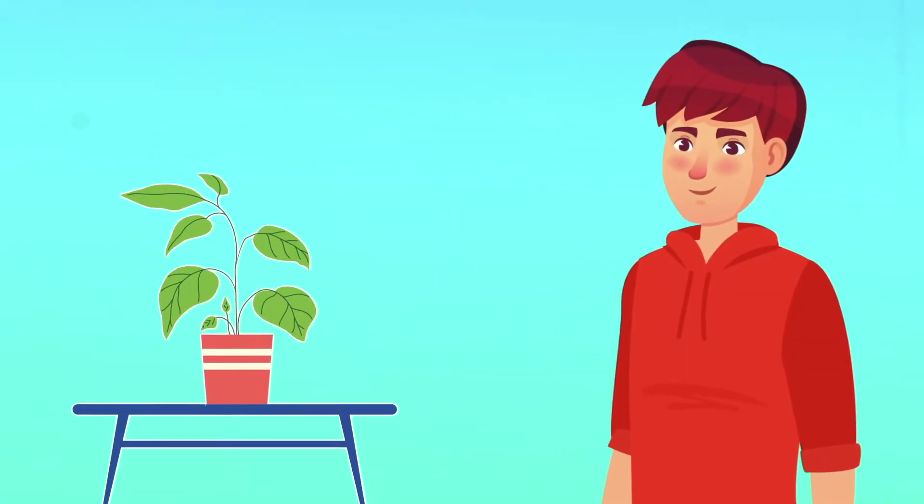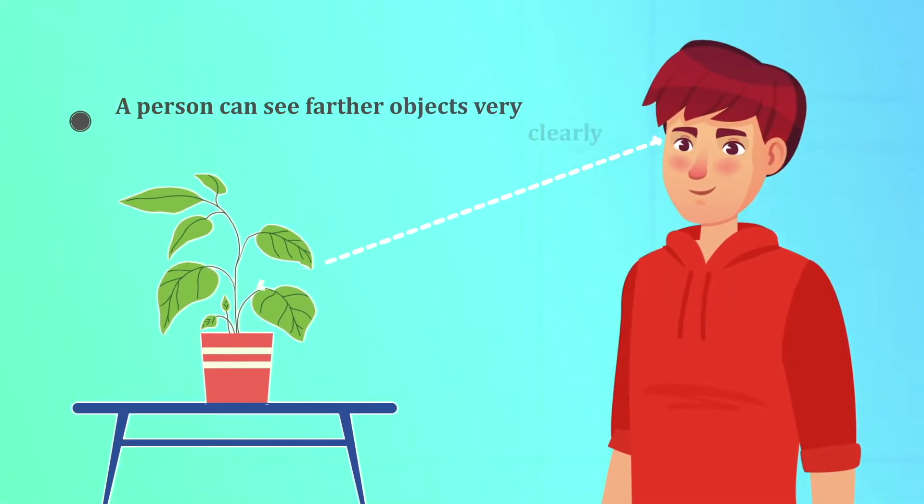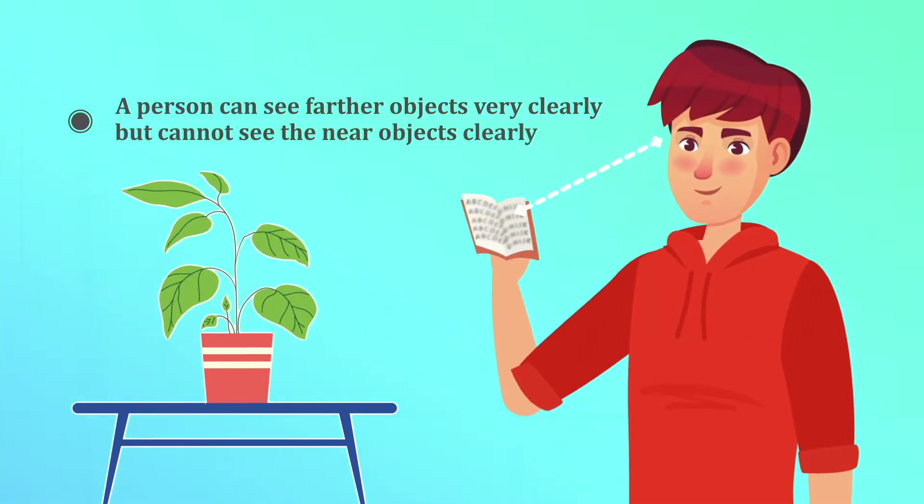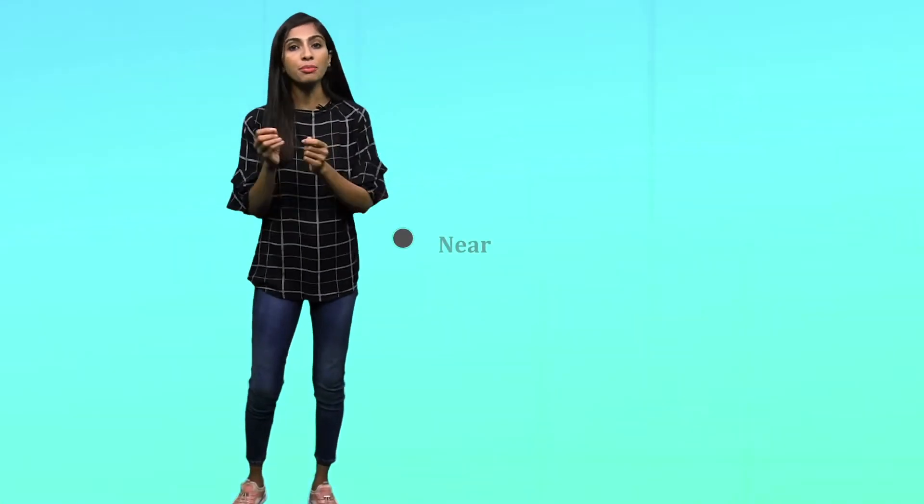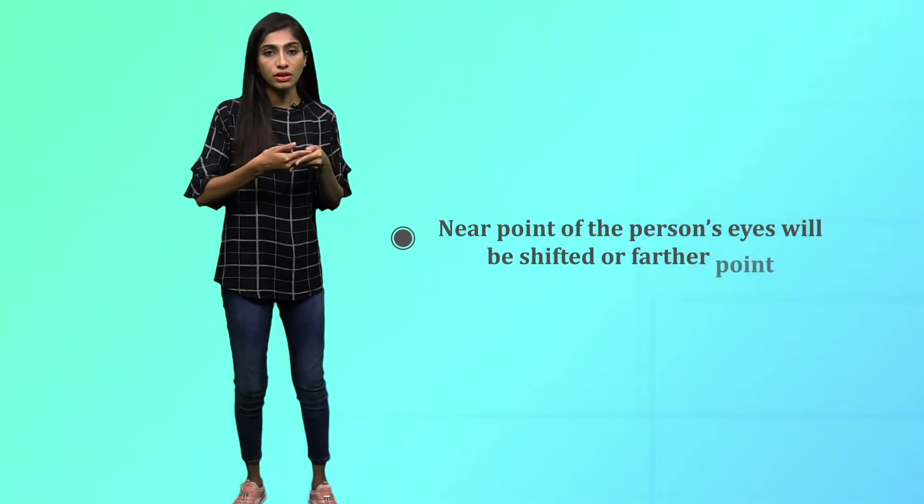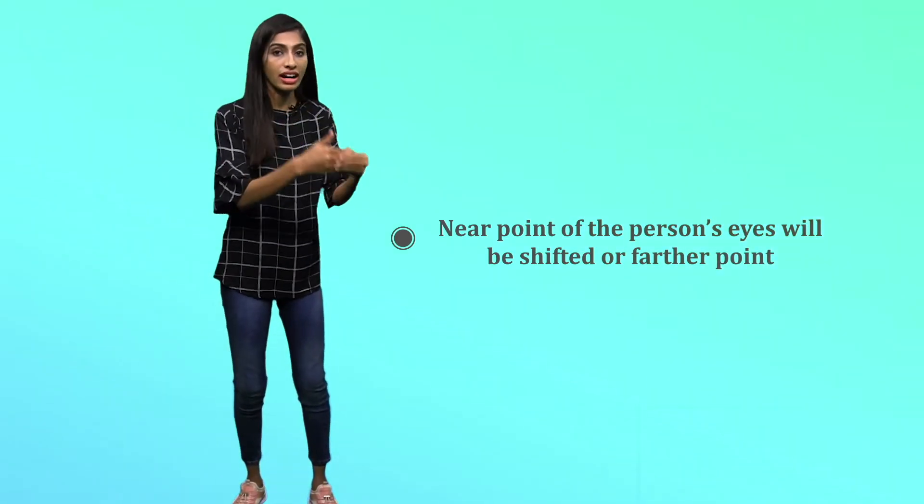Long-sightedness is a defect where a person can see farther objects very clearly but cannot see nearer objects clearly. It means the near point of the person's eyes has been shifted somewhere near to the point or farther to the point.